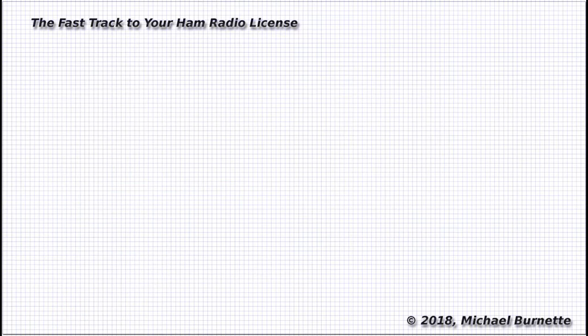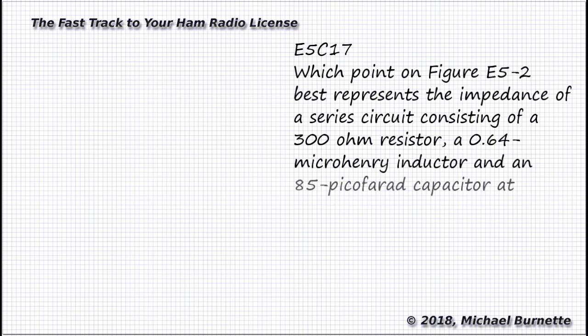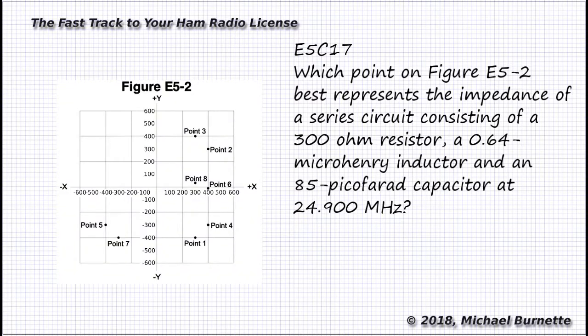Now, here comes an example of a question in the question pool that asks you to calculate and plot an impedance. Even though there are some simple ways to get to the right answer for half of these in the question pool with no calculation at all, yes, I'll show you how to calculate the most complicated one, and I'll suggest you practice each one to get your skills down, because two possible questions do require some calculations. All right, here's a question. It's question E5C17. Which point on figure E5-2 best represents the impedance of a series circuit consisting of a 300 ohm resistor, a 0.64 microhenry inductor, and an 85 picofarad capacitor at 24.900 megahertz. Here's figure E5-2, which is used for all of these questions.